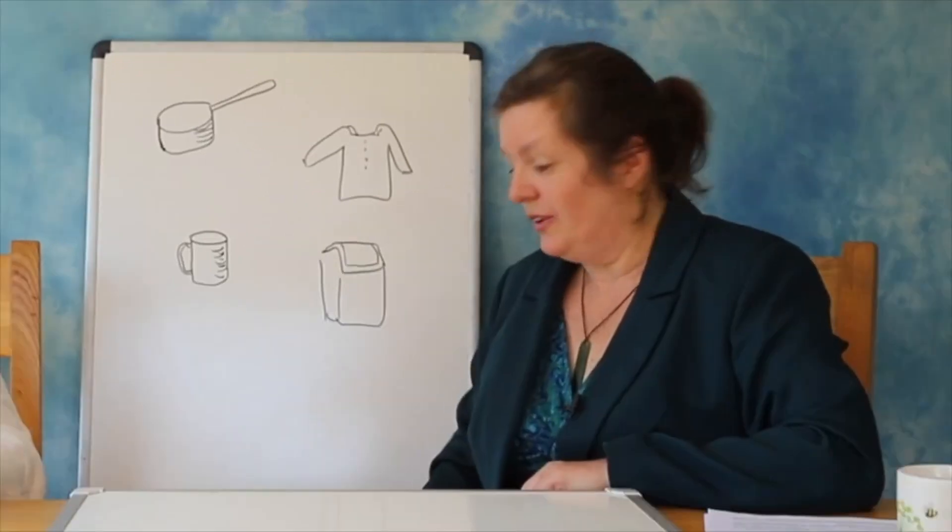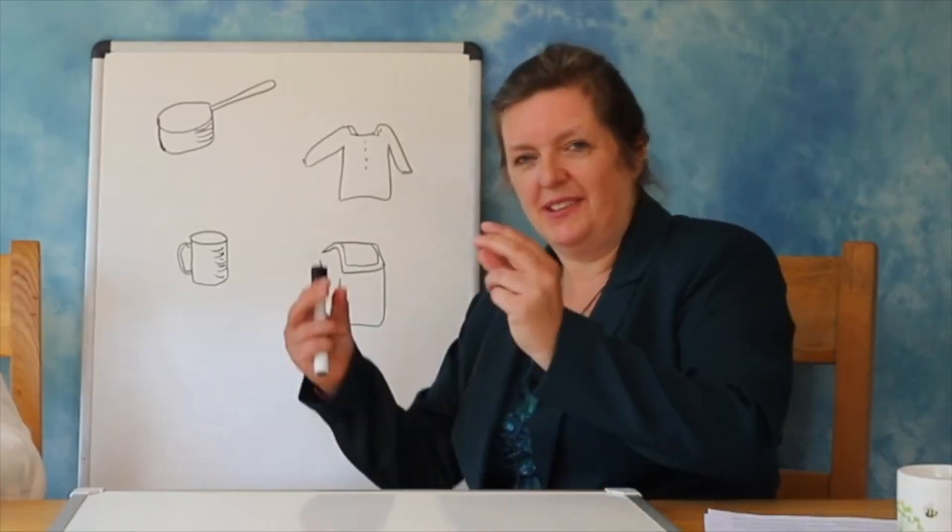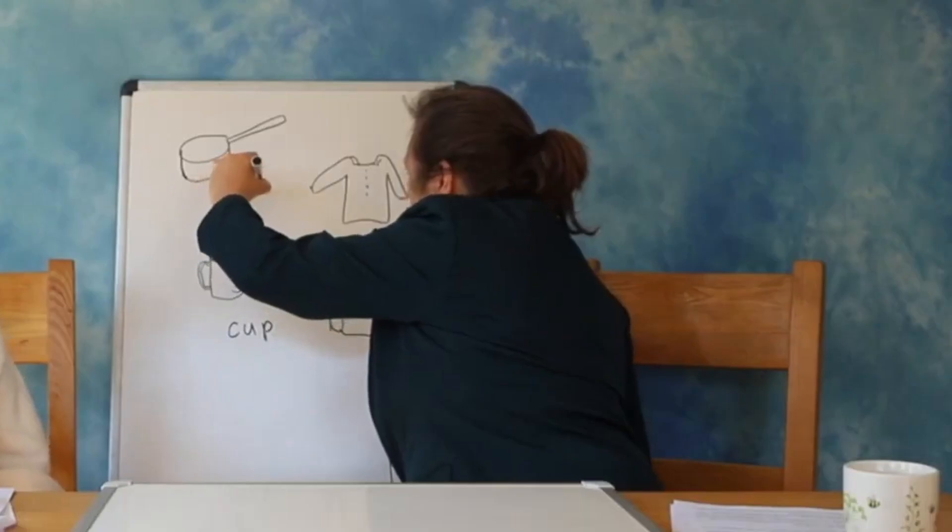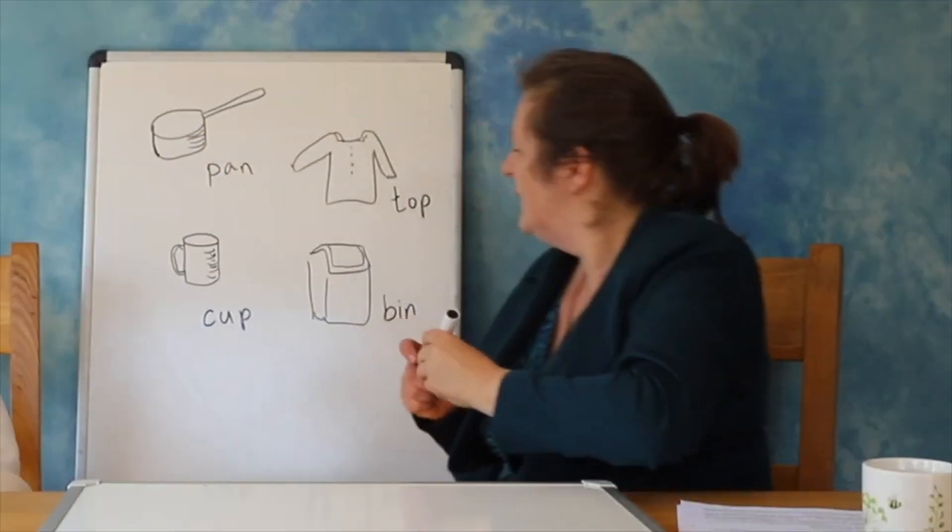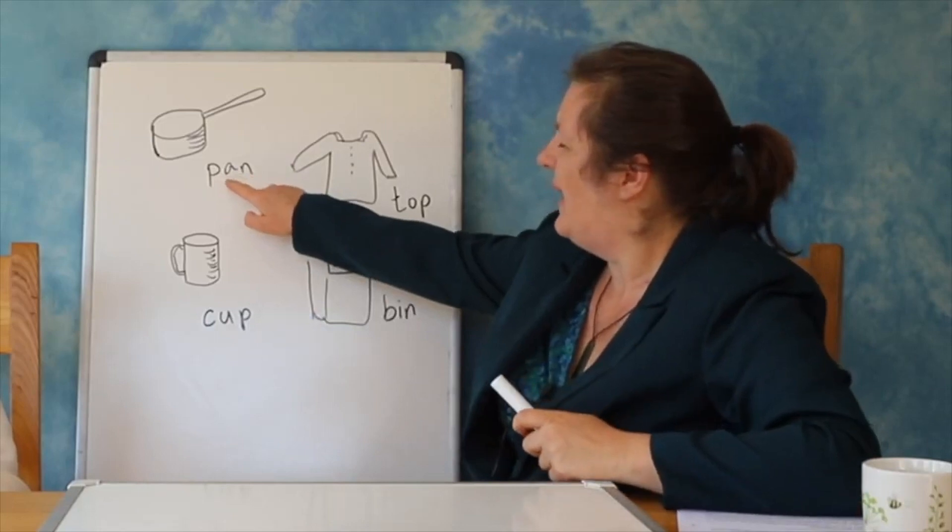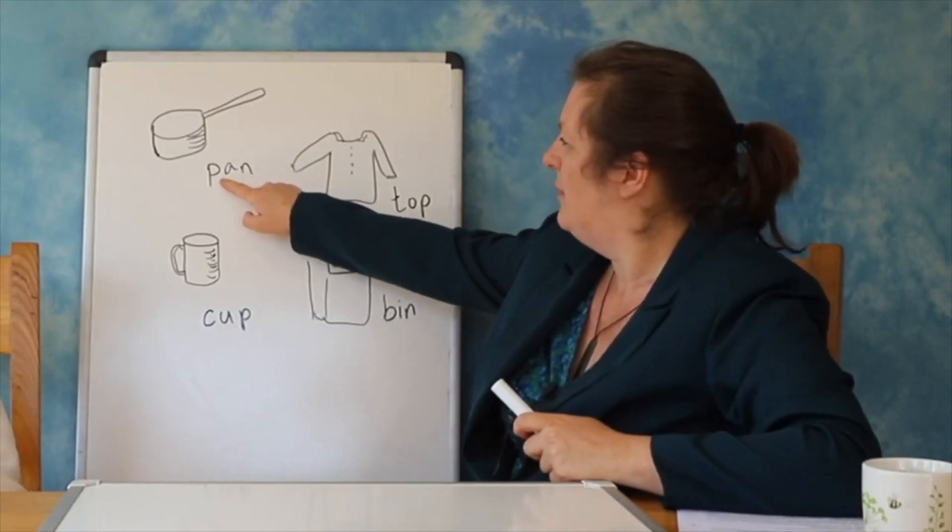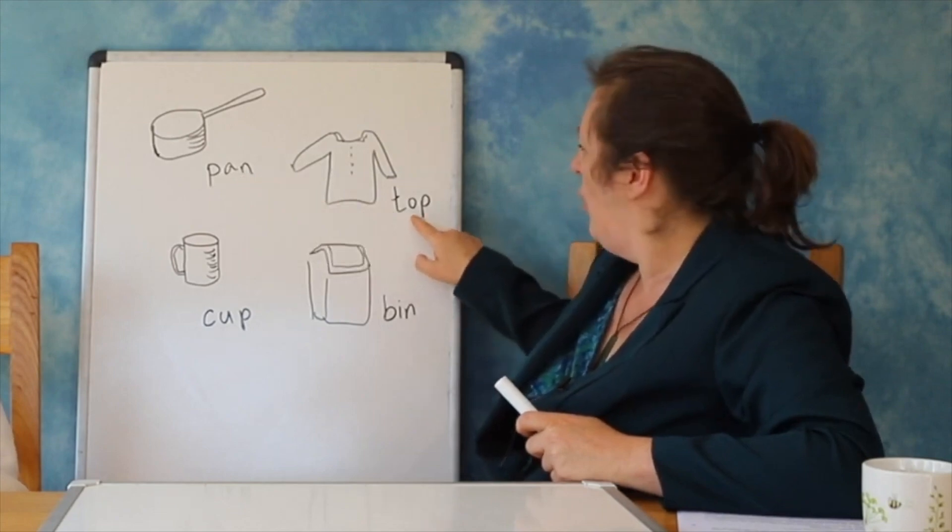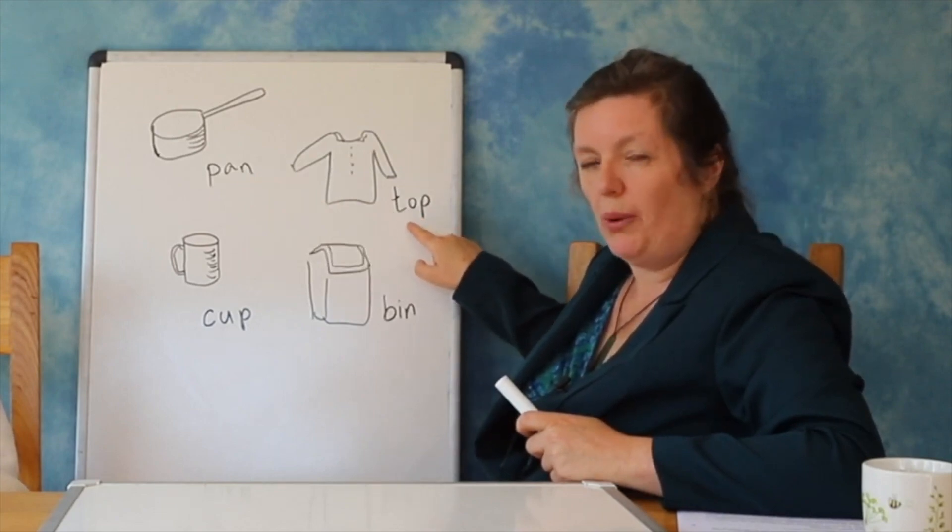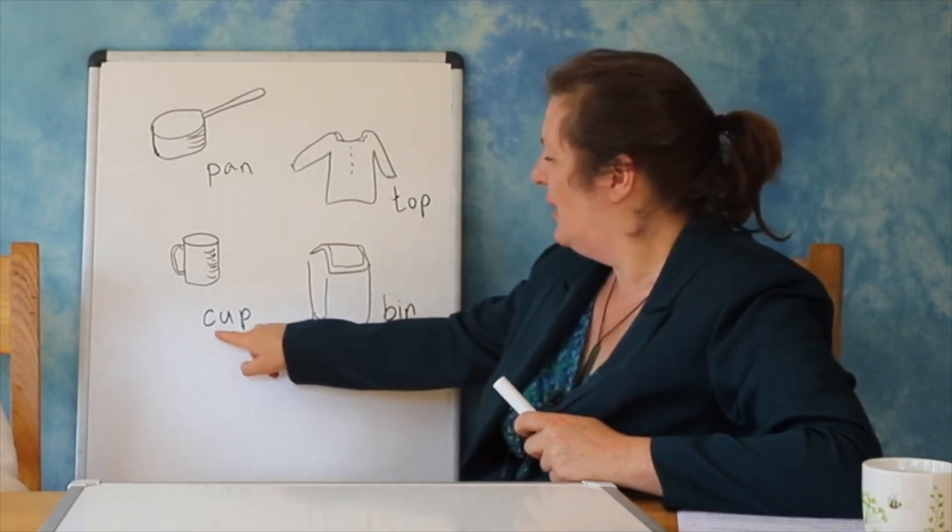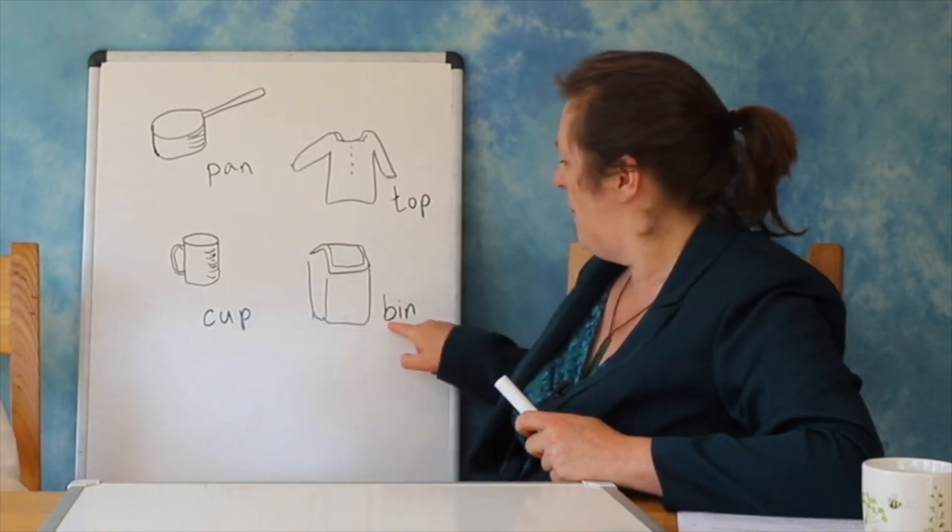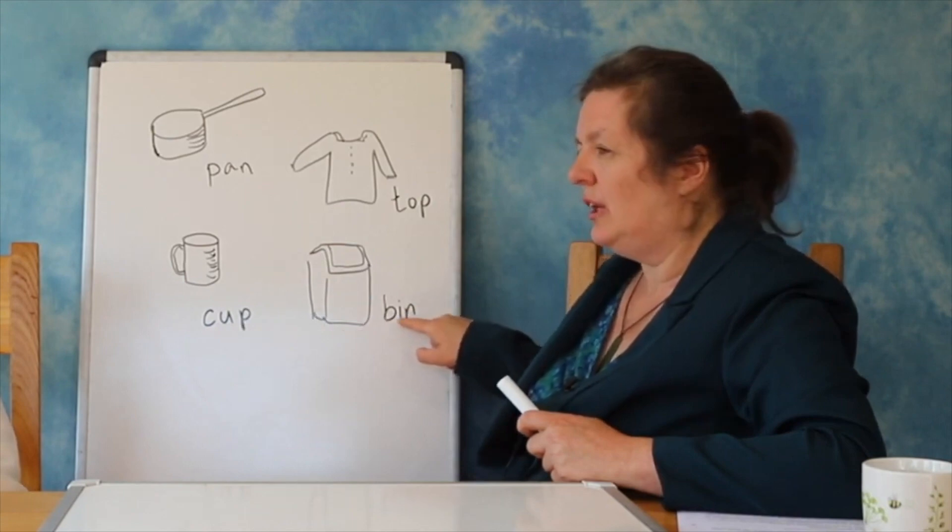You can also read the letters and put them together to make the word. So we've got p, a, n, pan. T, o, p, top. K, a, p, cup. B, i, n, bin.